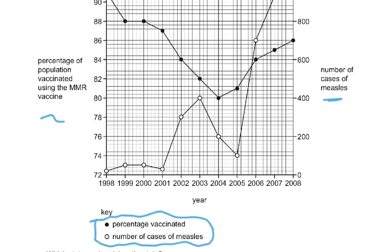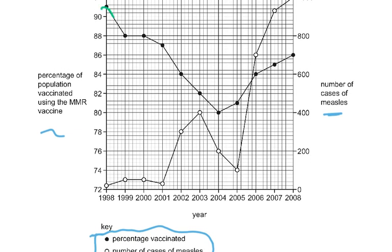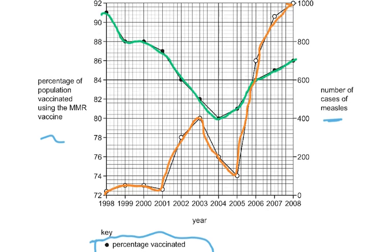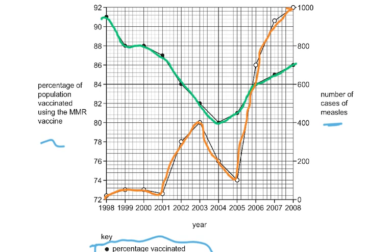The percentage vaccinated is colored green. The percentage vaccinated is going down and then going up — from 2004 it went up. It was higher in 1998, then the percentage vaccination decreased and then increased. The number of cases of measles were less and then increased, then decreased, then increased again. In 1998 the number of cases were less; they went up a little in 1999, 2000; in 2001 they were less, and then from 2001 to 2003 they really went up. Then from 2003 they went down again.